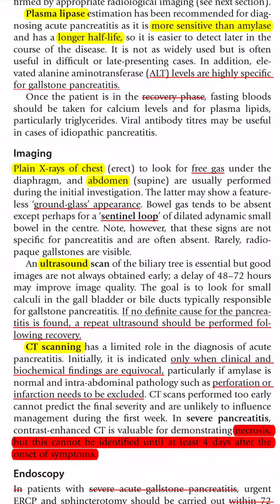For imaging: chest X-ray in upright position is done to see for free gas under the diaphragm, ruling out perforated peptic ulcer, and also to look for a pleural effusion as a complication of pancreatitis. Abdominal X-ray in supine position looks for ground-glass appearance or sentinel loop, suggesting paralytic ileus. Ultrasound helps identify the cause — particularly gallstones — confirming acute biliary pancreatitis. It can be repeated if no definite cause is found.